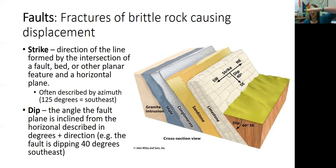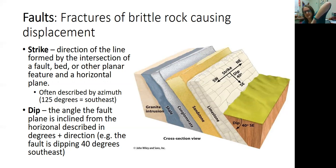If the fault is dipping just a little bit, barely below the surface, then the dip is going to be very small. If it's really steep beneath Earth's surface, then the dip is going to be large — near 90 degrees.